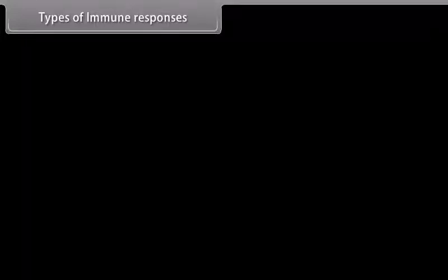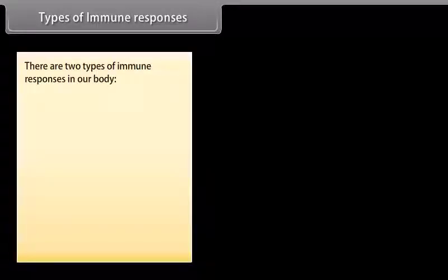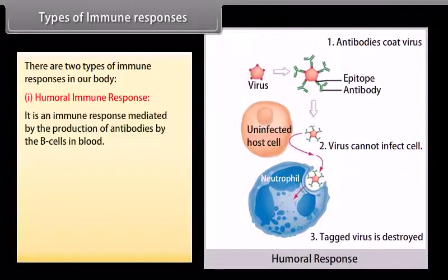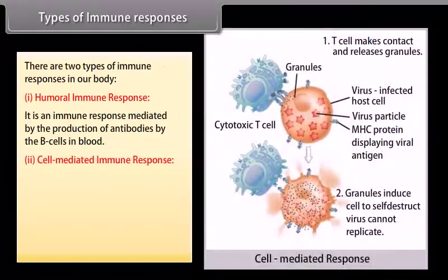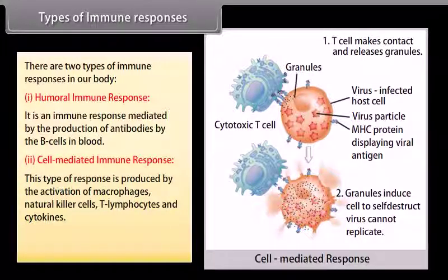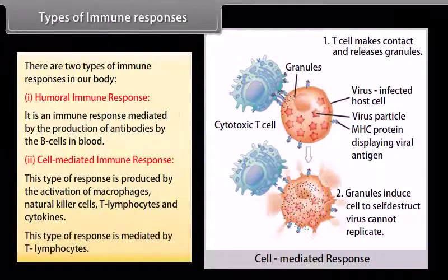There are two types of immune responses in our body. Humoral immune response is an immune response mediated by the production of antibodies by the B-cells in blood. Cell-mediated immune response is produced by the activation of macrophages, natural killer cells, T-lymphocytes, and cytokines. This type of response is mediated by T-lymphocytes.